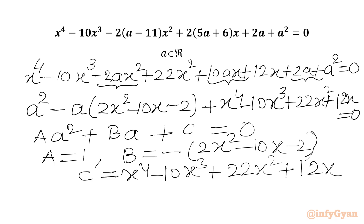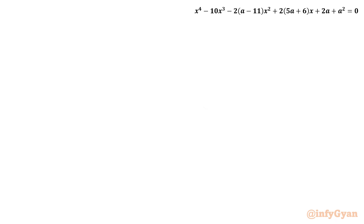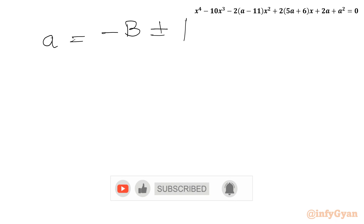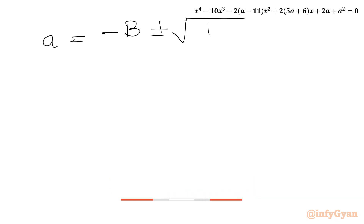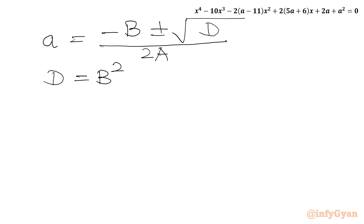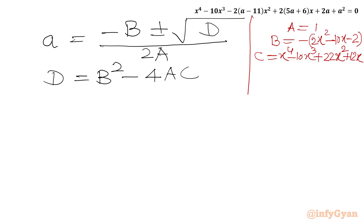Now we will apply the quadratic formula to calculate small a. So I can write: a = [minus B ± √D] / (2A), where discriminant D = B² minus 4AC. Now we have to apply all the values of A, B, and C.